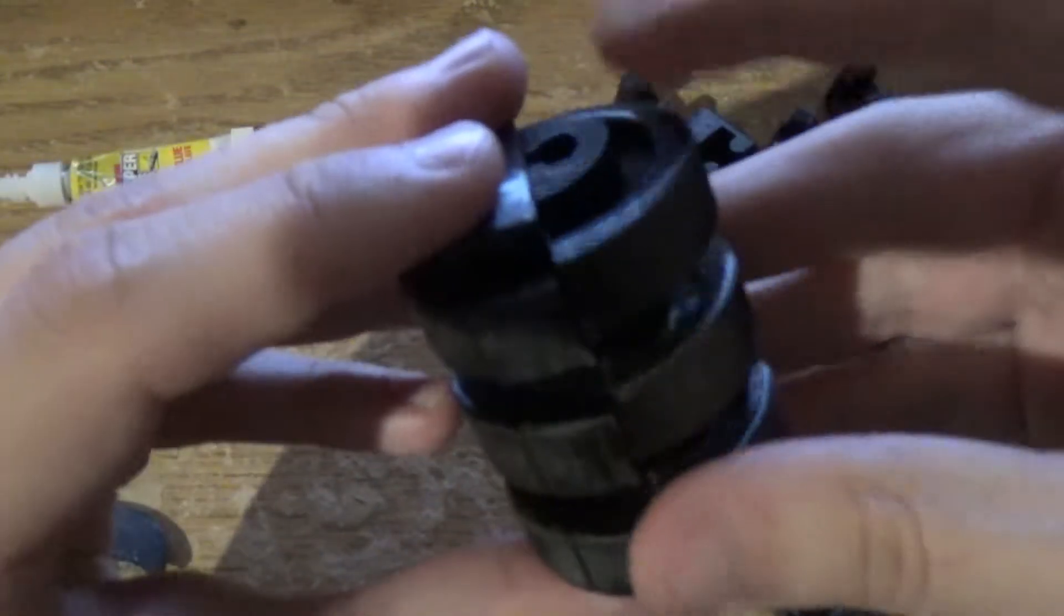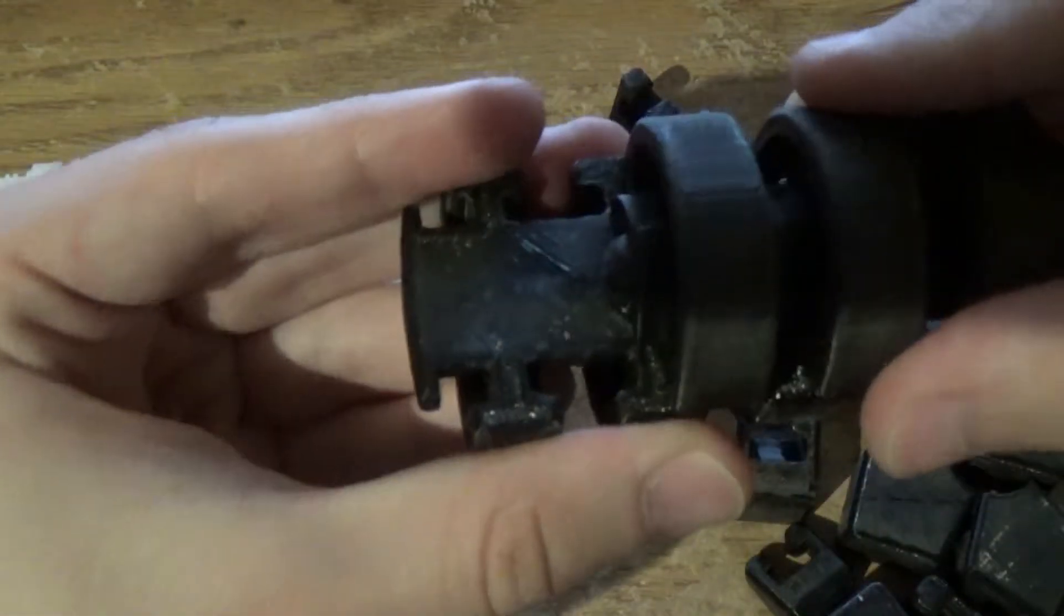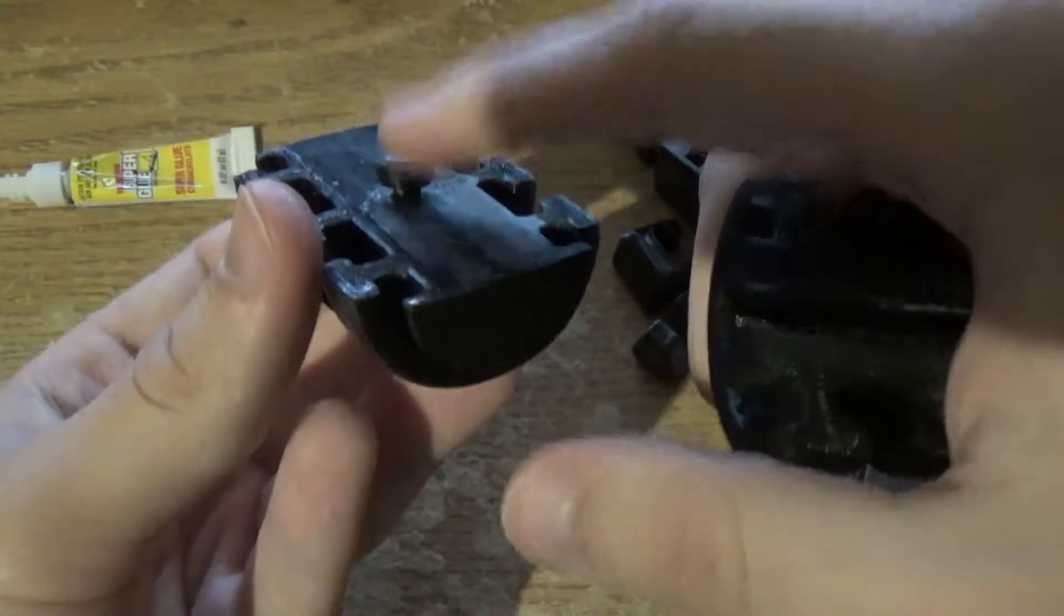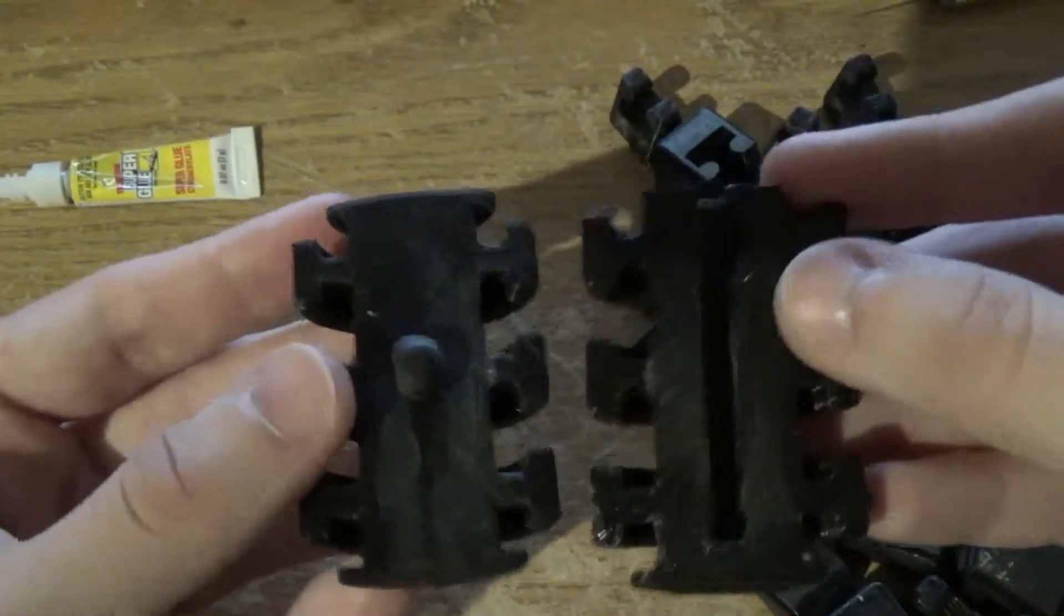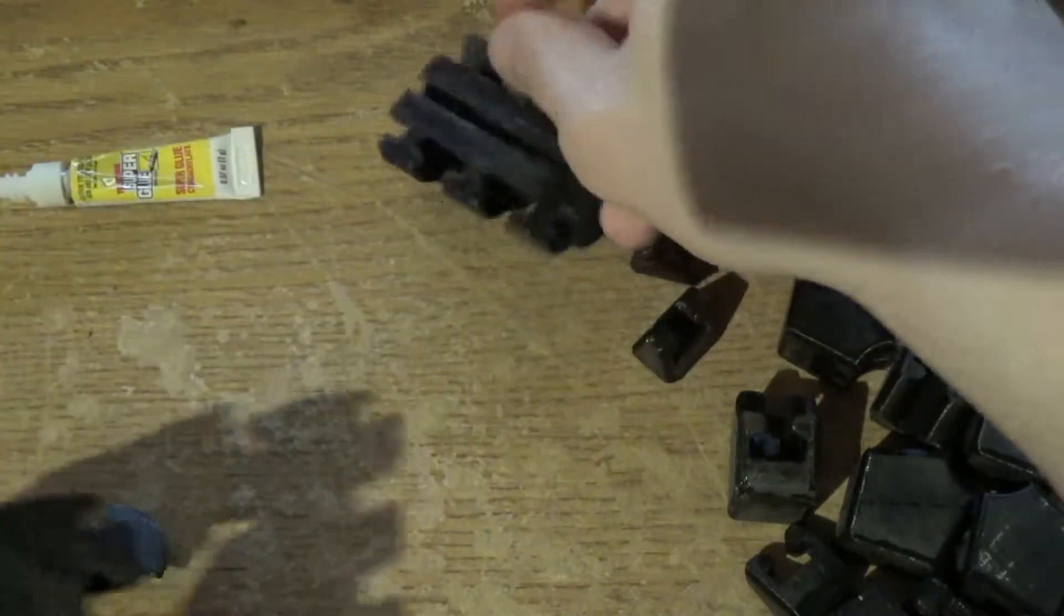And then once the super glue is dry you can just take the pieces and split them using this rail. There you go. This is glued in where it needs to be. And now I'm going to put all of these pieces onto the tracks.